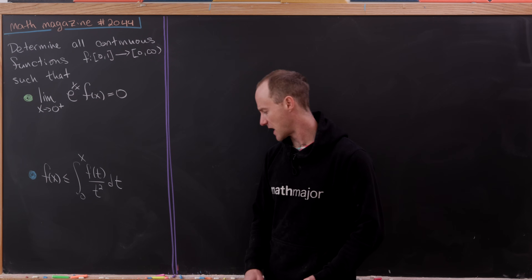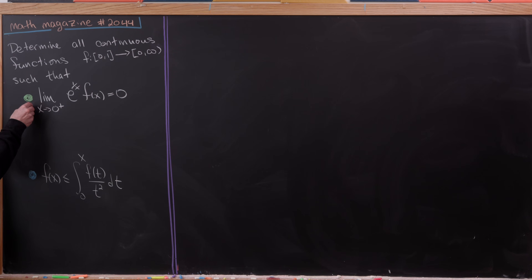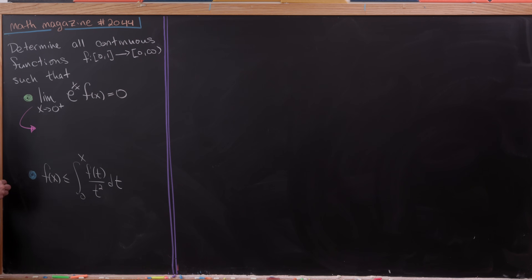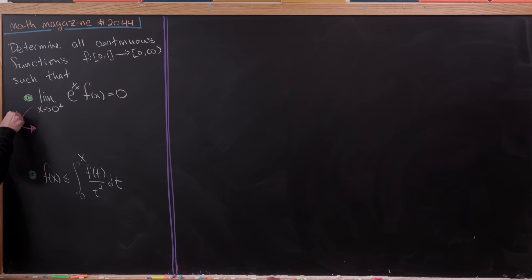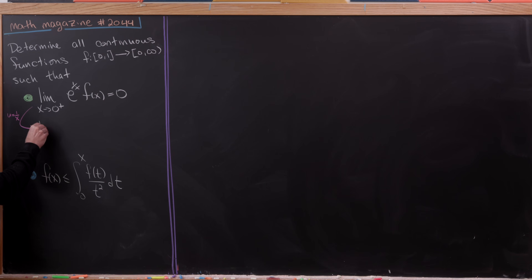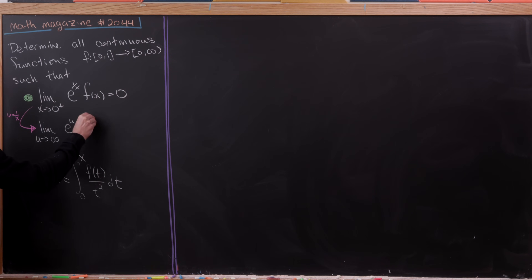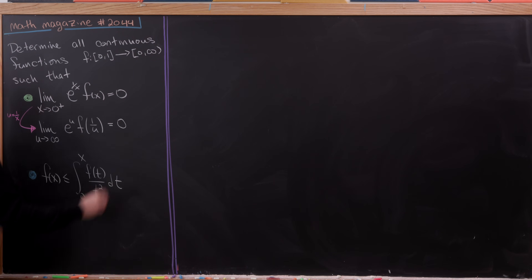I'd like to start by doing a change of variables on this first limit to make it look a bit different. The change of variables is u = 1/x, which means x = 1/u. If x is going to 0 from above, that means u is going to positive infinity. So we have the limit as u goes to infinity of e^u times f(1/u) equals 0.